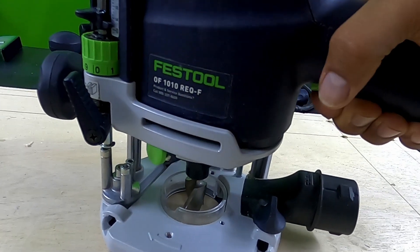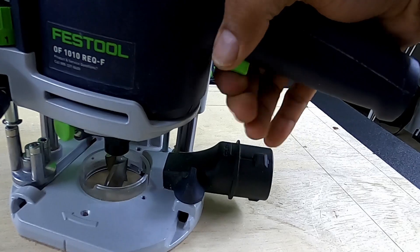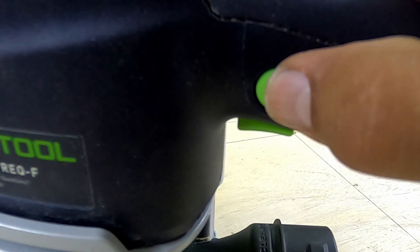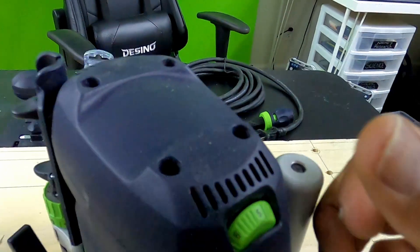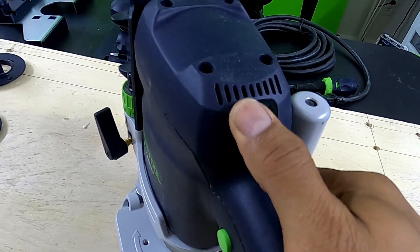Right here you've got your trigger and a little green button. You push it in and you can lock the trigger in the on position. Then you just push it again or pull the trigger again and it releases. You've got a speed setting here that goes from six, the highest, all the way down to one.